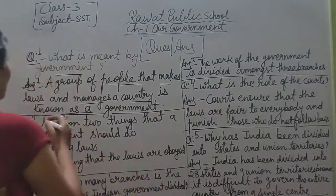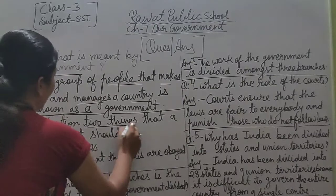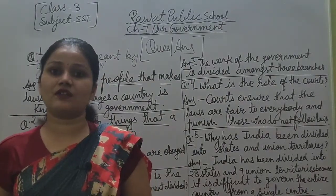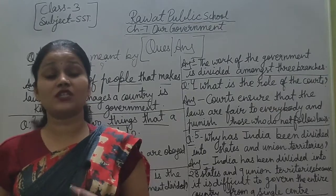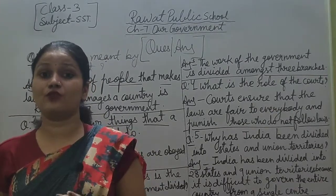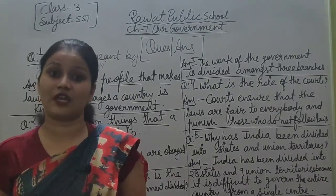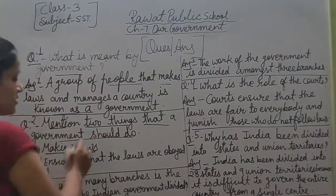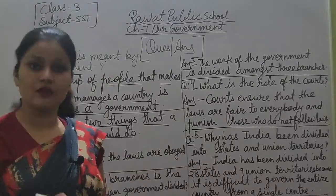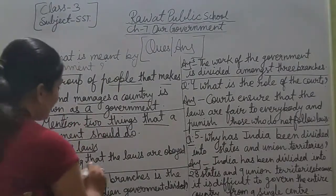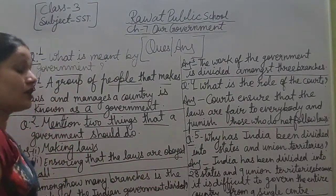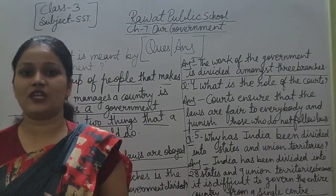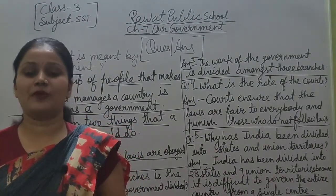Now next question is: mention two things that a government should do. The answer is: first, making laws; second, ensuring that the laws are obeyed by all.